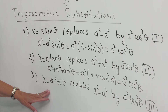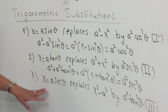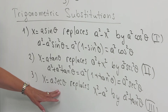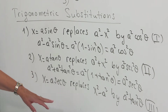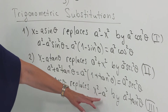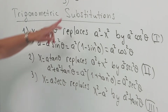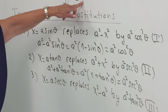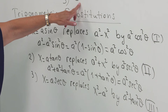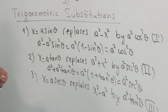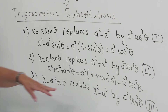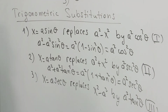The third form is the replacement of x by a secθ. x² − a² is replaced by a² tan²θ — something like x² − a². This is the third type.